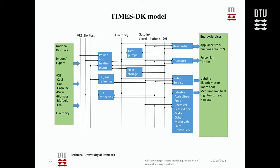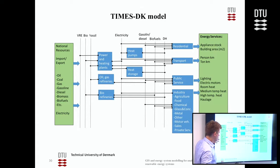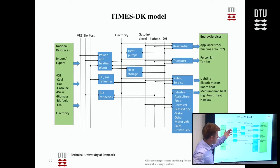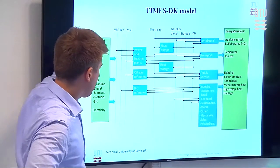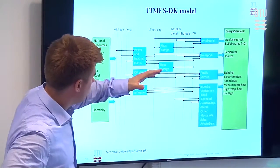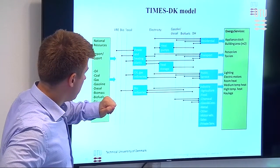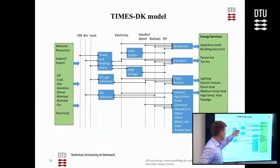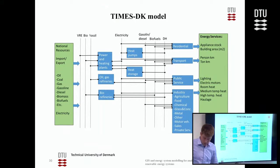This slide is the most illustrative of TIMES. It covers all energy transformation from primary energy on the left side to energy services on the right side — through power and heat sector, biorefineries, and fuel sector. Electricity and fuels are produced and later utilized in residential, transport, industry, and other sectors. Each sector gets one or more commodities in and one or more commodities out — it's all one big set of transformations of energy.